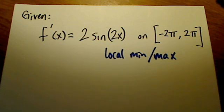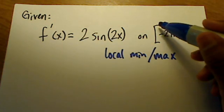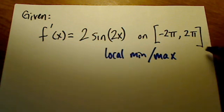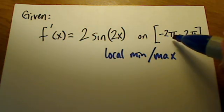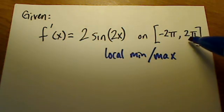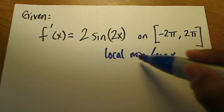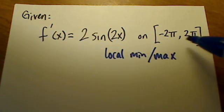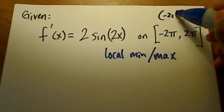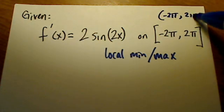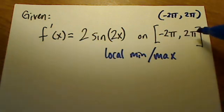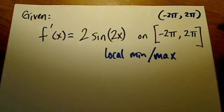Now, if you remember from your calculus, these square brackets here in interval notation means that it includes these two values here. These are our endpoints, but local max and local min do not exist at endpoints. They only exist on the interior of an interval. So, we're not going to include negative 2π and 2π.